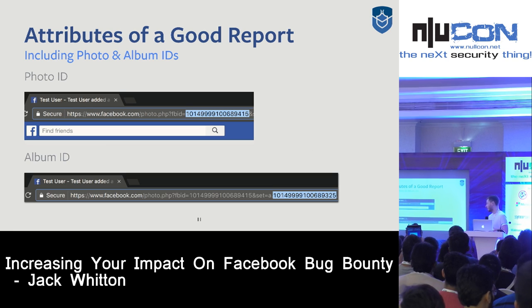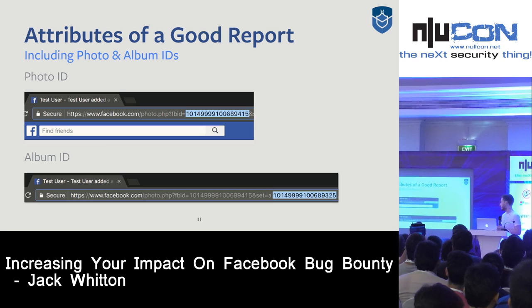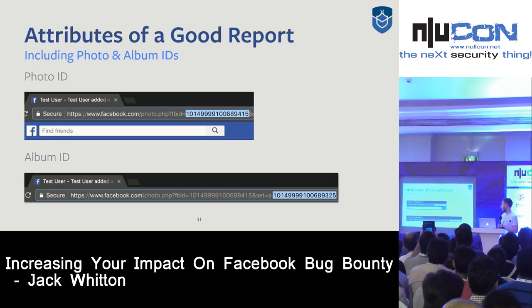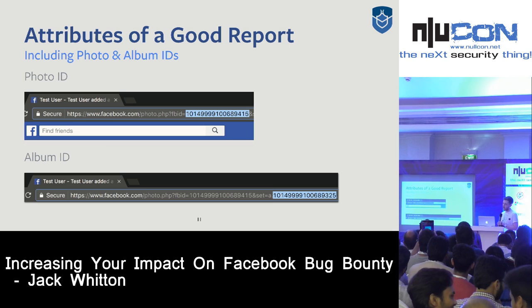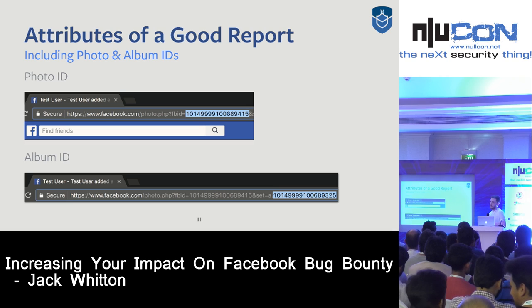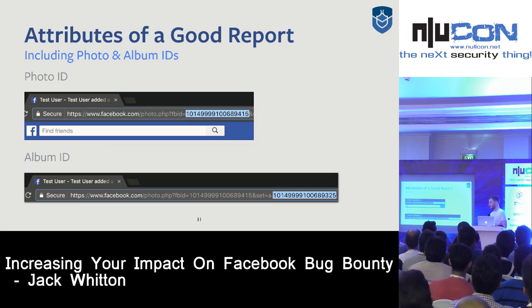Photo IDs are again in the URL. Album IDs are in the set parameter in the URL. For other types of objects you may need for testing, just share the full URL if you're unsure which is the correct ID.